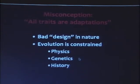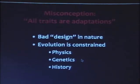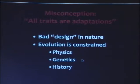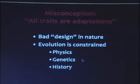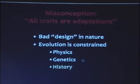Another misconception is that evolutionary biologists should be able to explain all traits in terms of their adaptive value. But there are perfectly good reasons to expect mediocre or even bad designs in nature — evolution is constrained. It's constrained by the laws of physics, by genetic constraints, but also by historical constraints. Natural selection can only operate on what is already available, and so evolution tinkers with what's available.